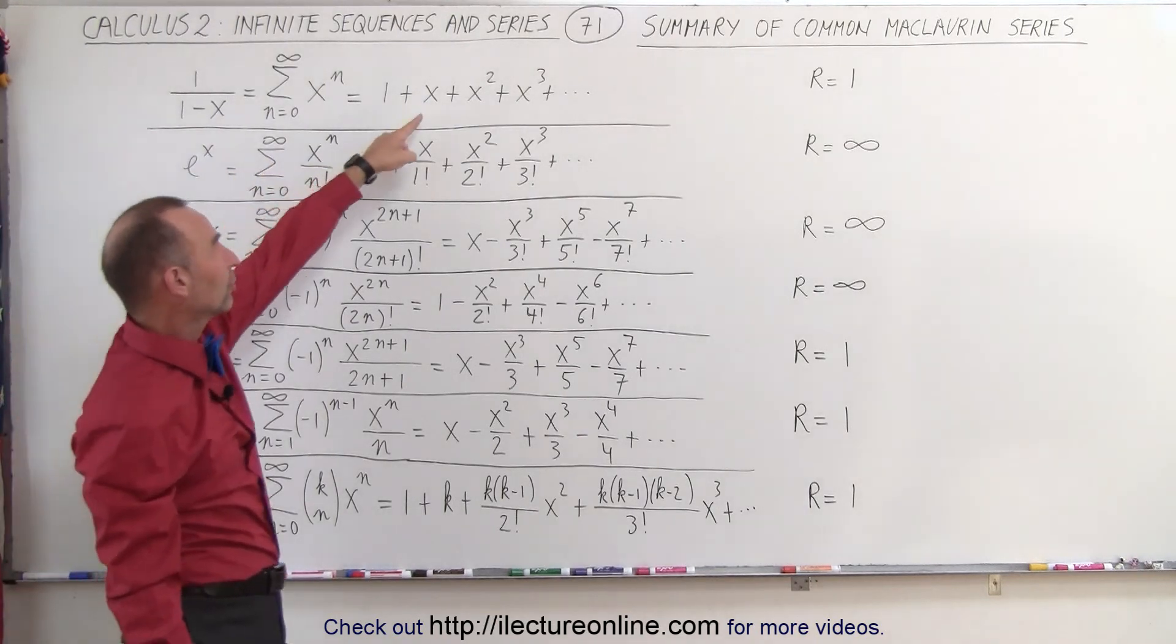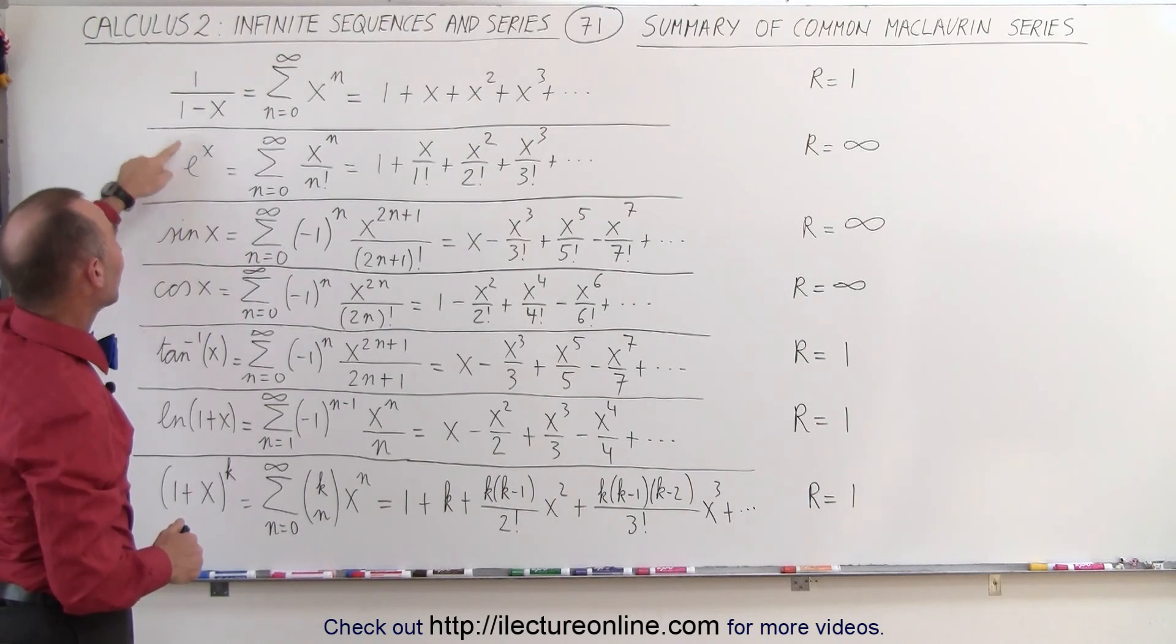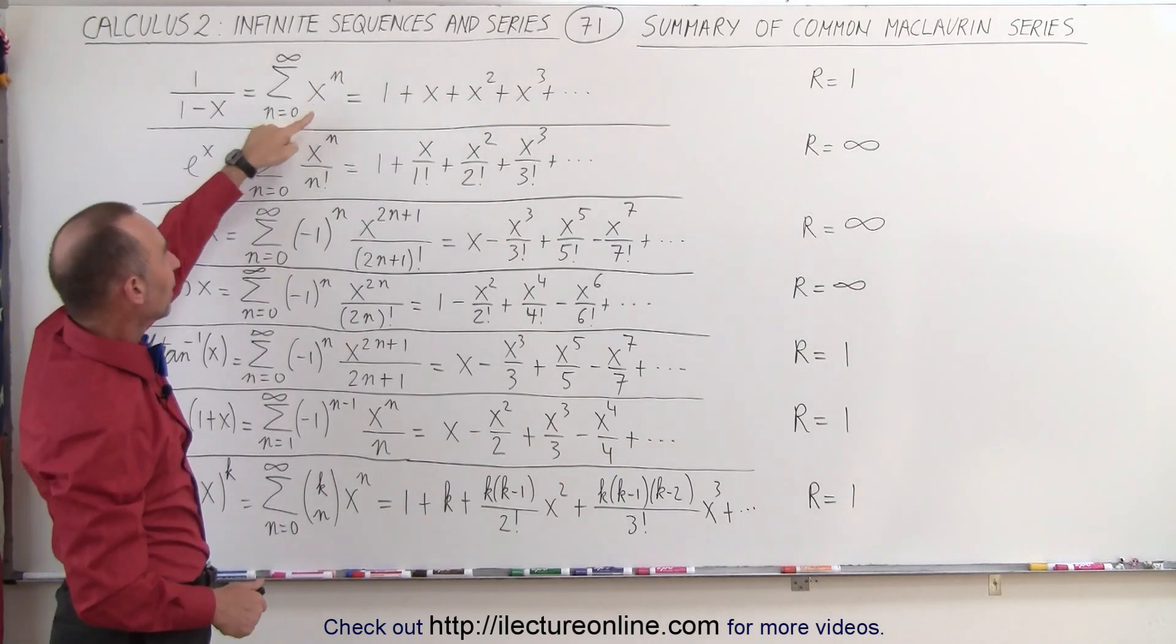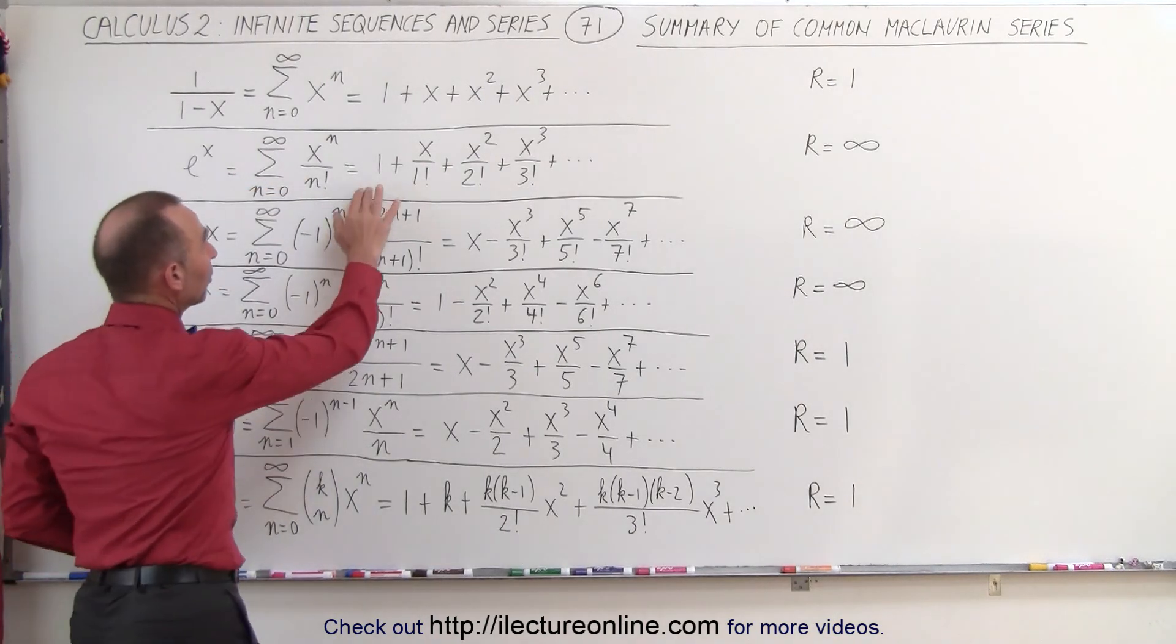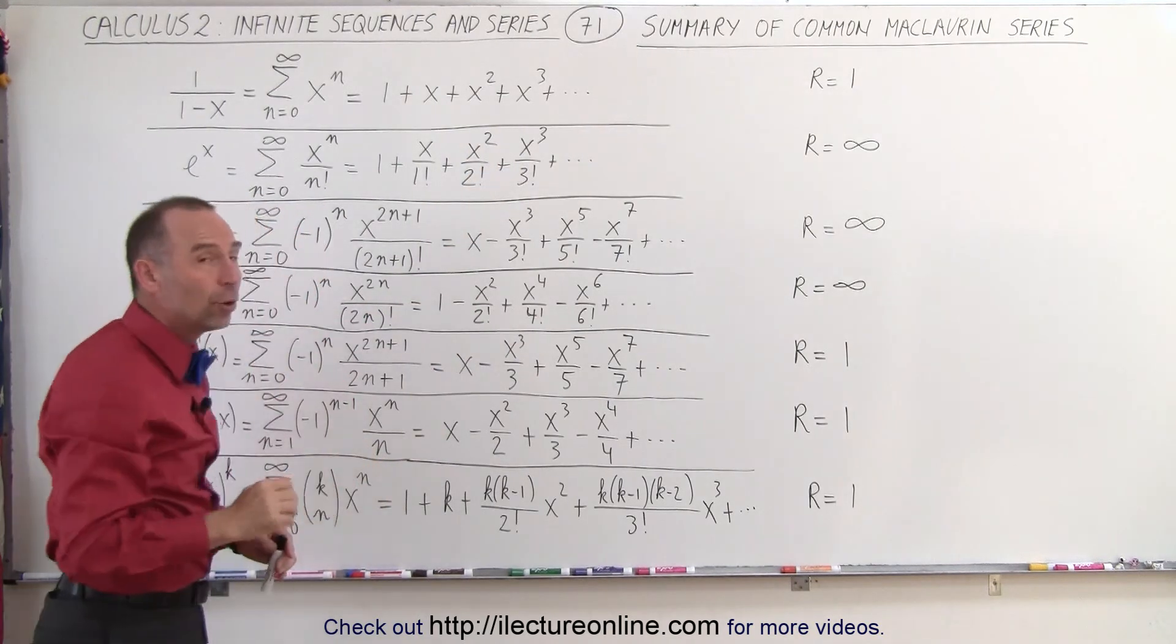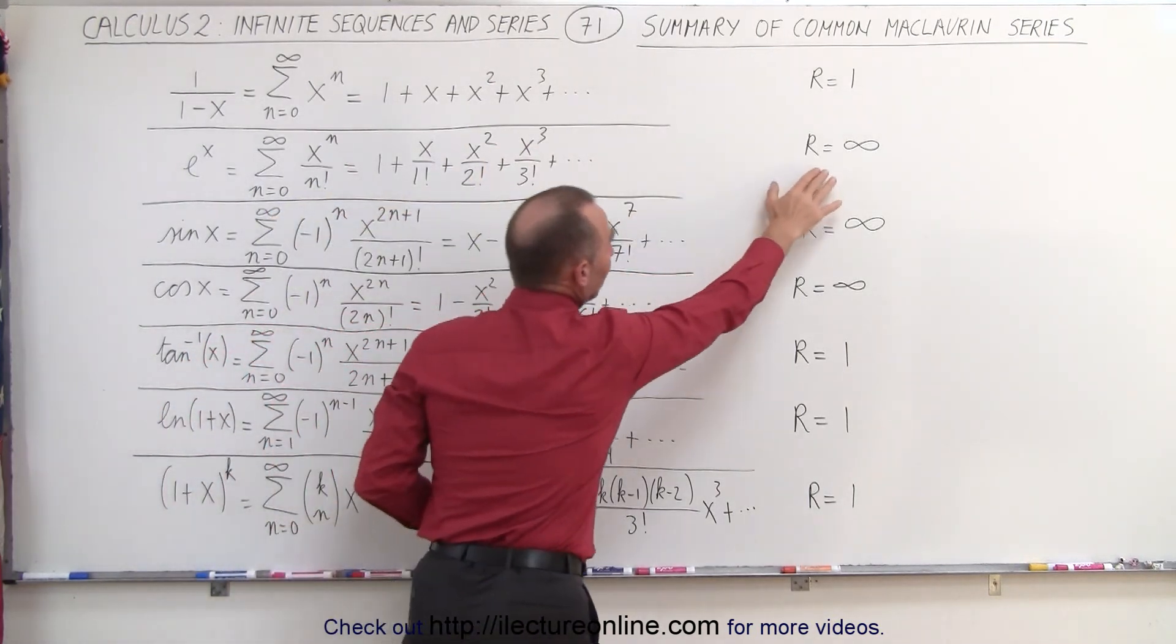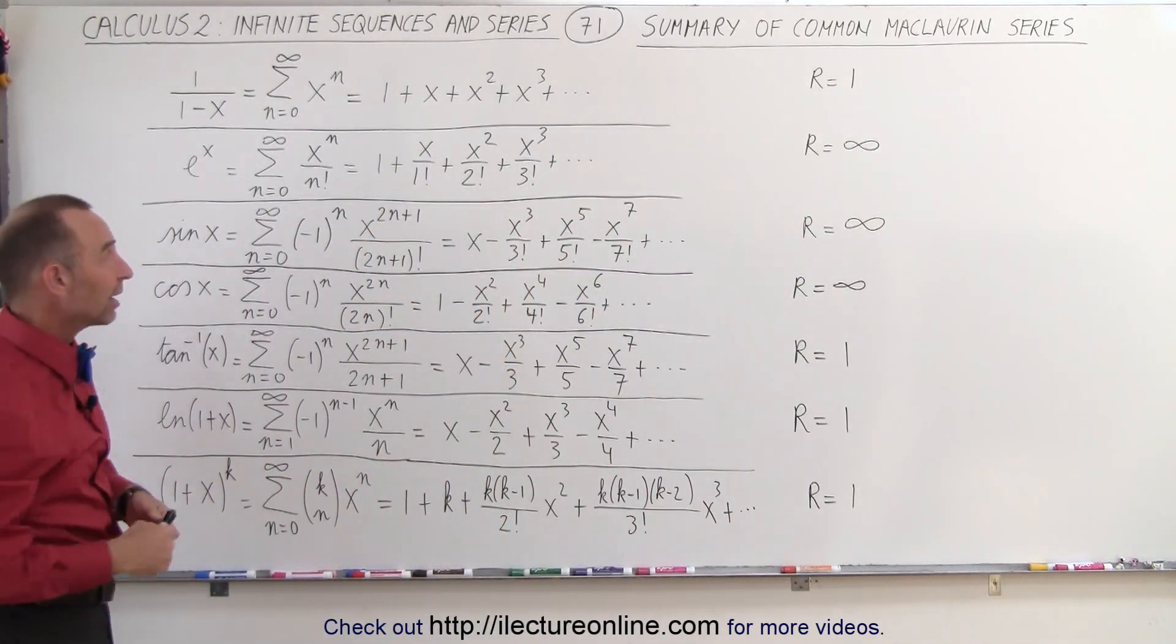For large values of x, that's of course not going to work. The next one is e to the x. Even though there seems to be a lot of difference between these two functions, notice that their expressions are very similar. Here we have x to the n, there we have x to the n divided by n factorial. So we have 1 plus x over 1 factorial plus x squared over 2 factorial and so forth. Notice because the factorials in the denominator grow much faster than the expression in the numerator, we have a radius of convergence equal to infinity, which means this is valid for any value of x.